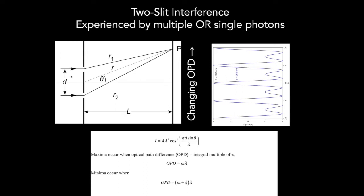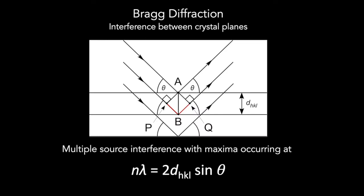Amazingly, in quantum mechanics, even a single photon incident on two slits goes through both slits at once and can interfere with itself. Another way to introduce an optical path difference is through interaction with planes of atoms — for instance, x-rays scattering off successive planes in a crystal. This multiple-source interference produces intensity maxima at very well-defined angles, and can be used in powder x-ray diffraction to determine the distance between crystal planes.